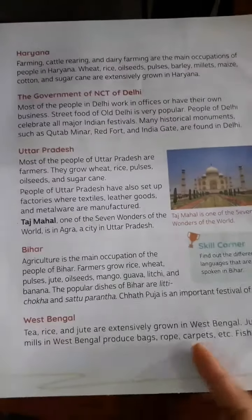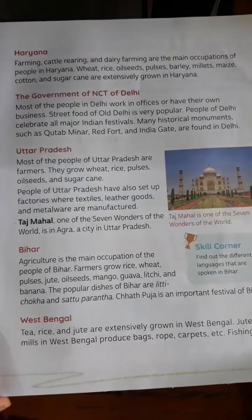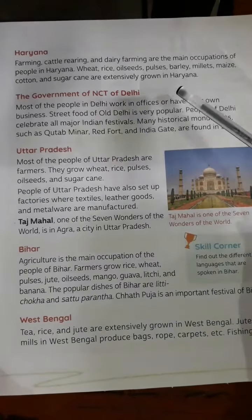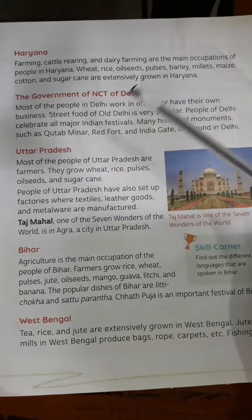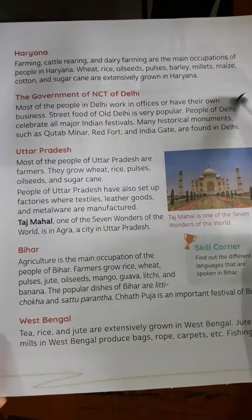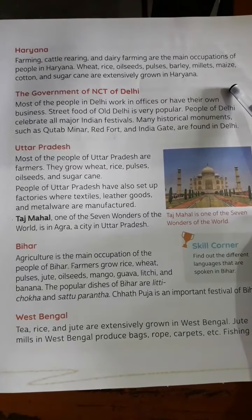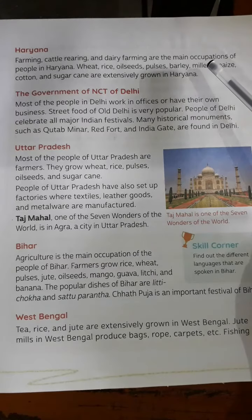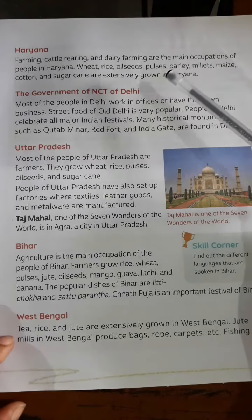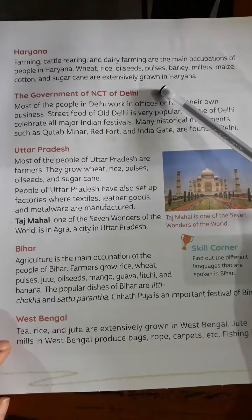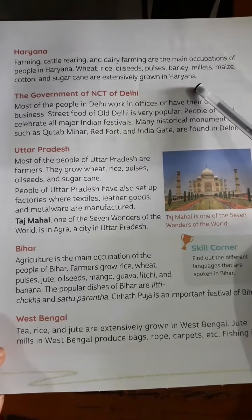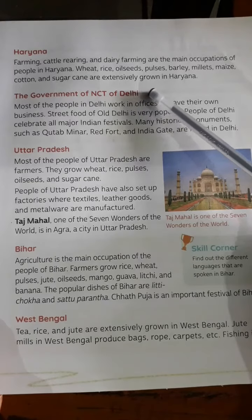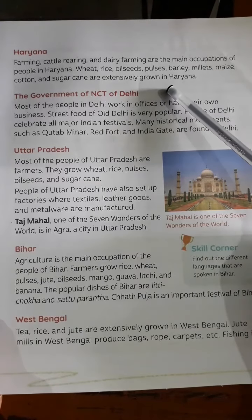In Haryana, farming, cattle rearing, and dairy farming are the main occupations. The main crops grown here are wheat, rice, oilseed, pulses, barley, millet, maize, cotton, and sugarcane.